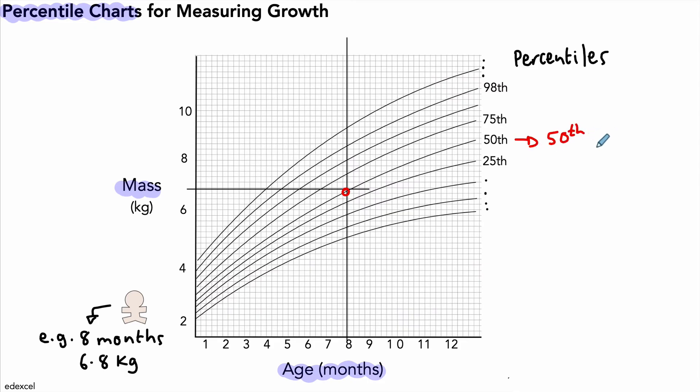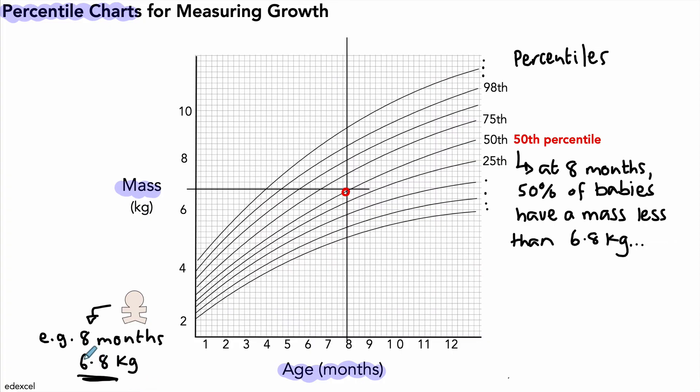The 50th percentile—so what exactly does that mean? Well, that means that for this baby which is 8 months old, 50% of babies in the country have a mass less than 6.8 kg. That's what we mean by the 50th percentile.